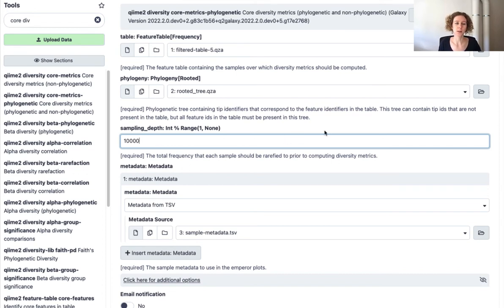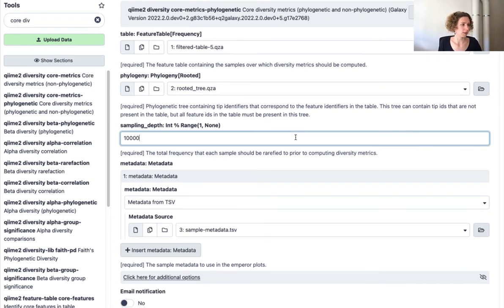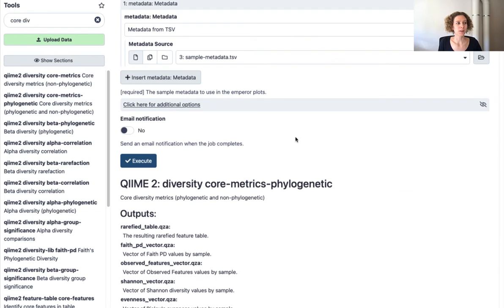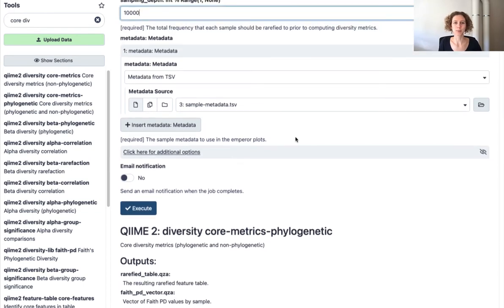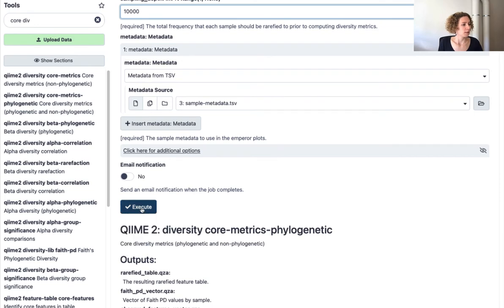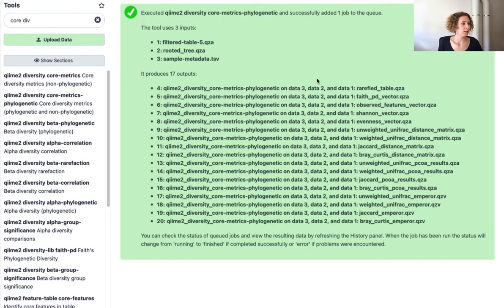And the only thing I have to add here is the sampling depth. So the rarefaction depth that you learned about in an earlier tutorial through the generation of the rarefaction plots. This is something one simply has to get used to, like picking a rarefaction depth. There is no golden rule for it, it's always a question of what you're actually interested in.